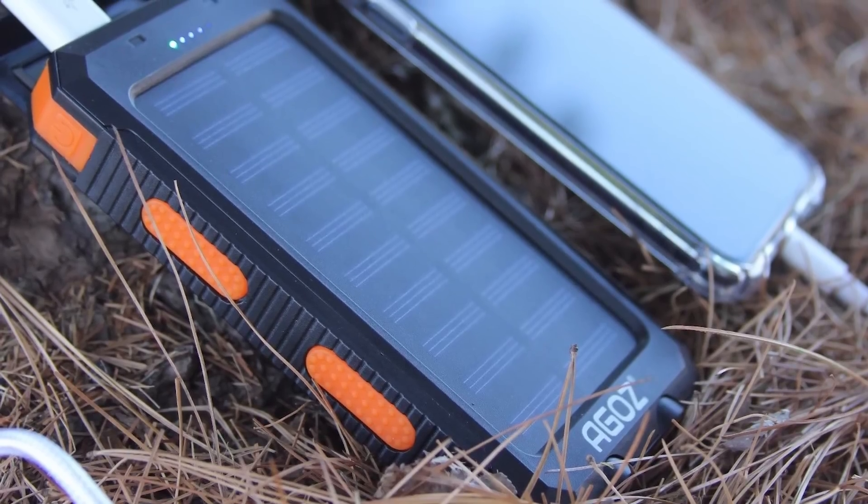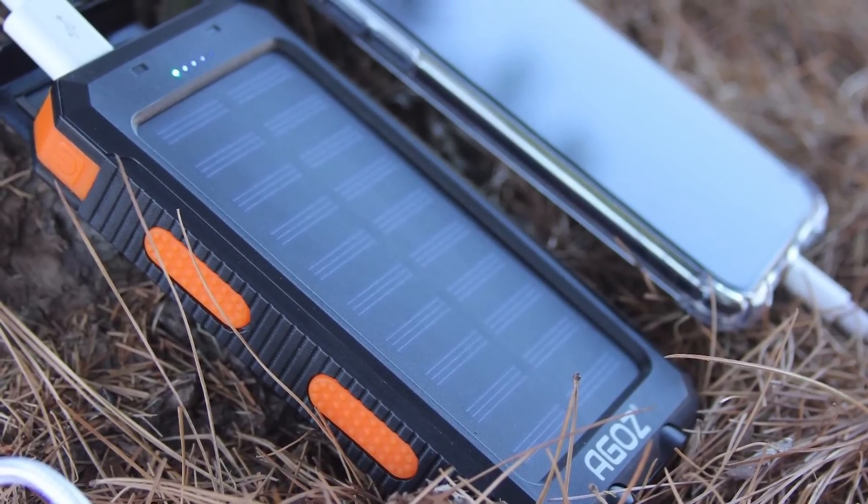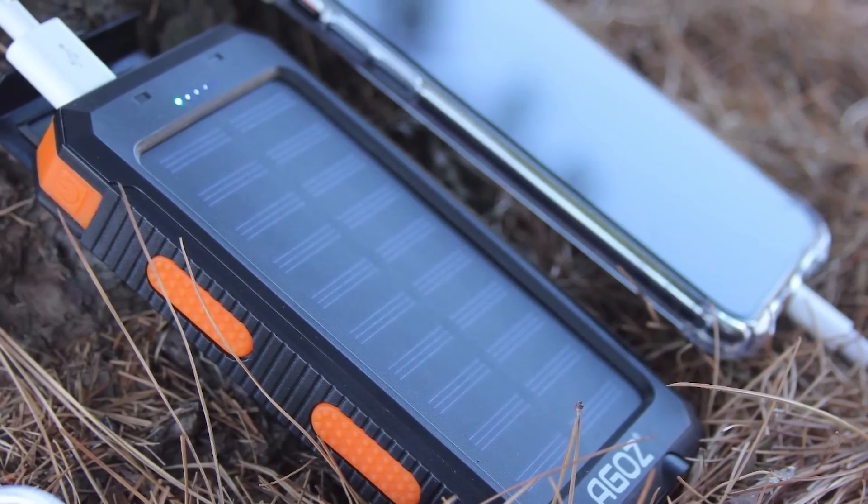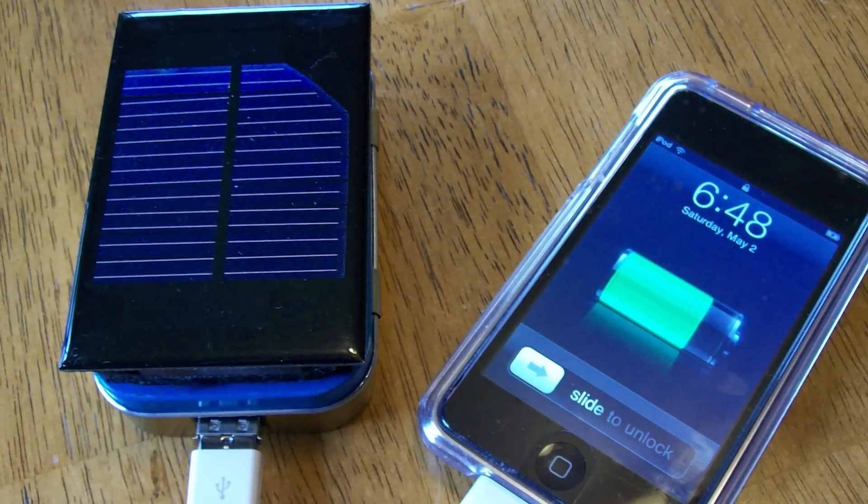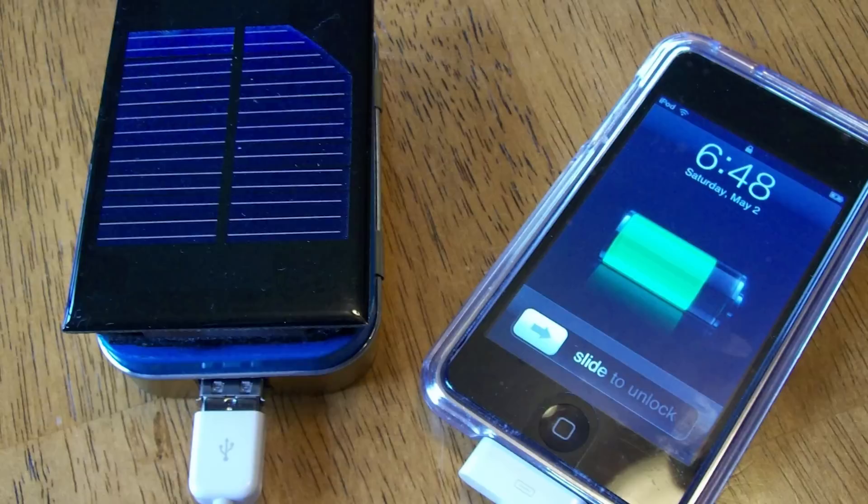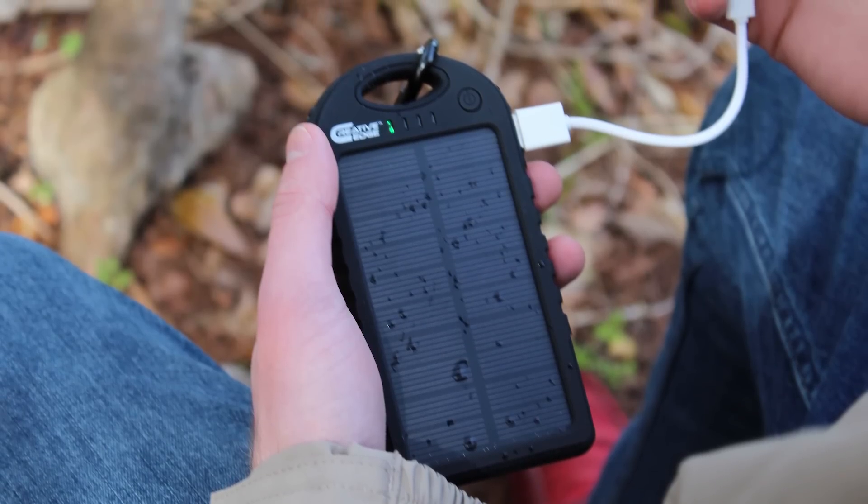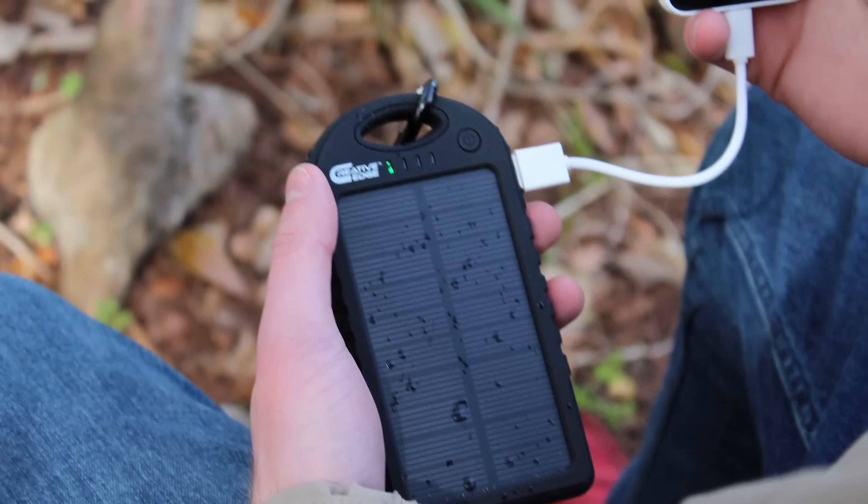Instead of purchasing a backup battery, you can harness the power of the sun by constructing your very own portable solar-powered charger. This was initially meant for a phone but can be adapted for use with all sorts of devices, meaning you can stay connected all day long as long as the sun's out, of course.